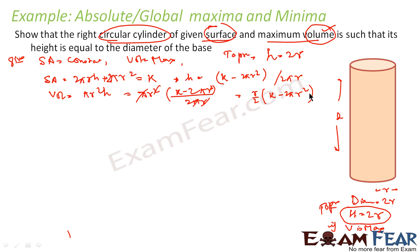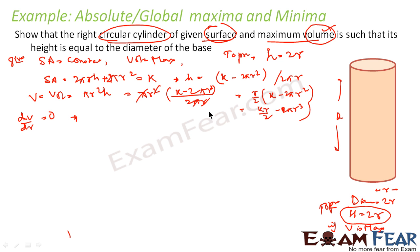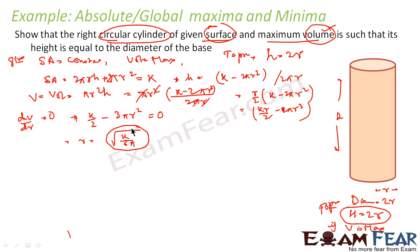Now find dV/dr. Expanding V = kr/2 - πr³, so dV/dr = k/2 - 3πr². Setting dV/dr = 0: k/2 = 3πr², which gives r = √(k/(6π)). This is the critical point, but we need to confirm whether it is a maximum or minimum.